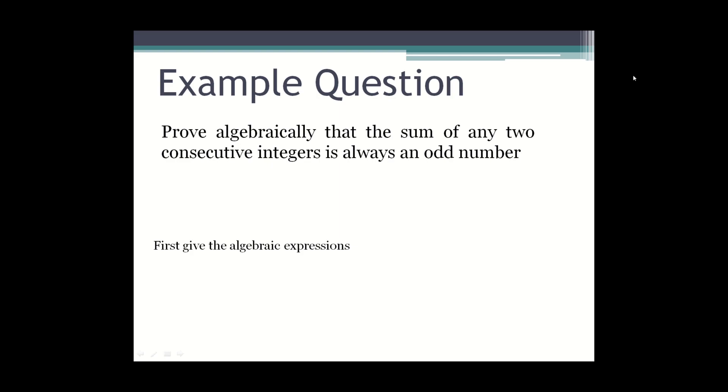We're going to look at the first example question which is prove algebraically that the sum of any two consecutive integers is always an odd number. So you first give your algebraic expressions of n and n plus 1.